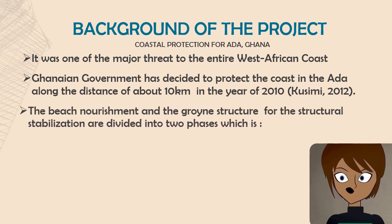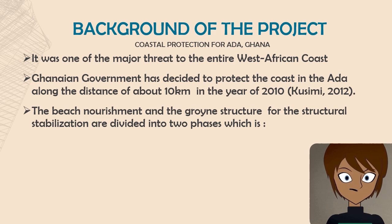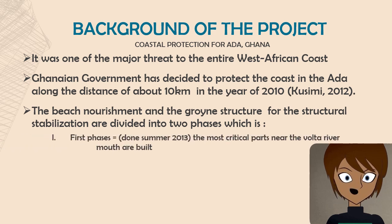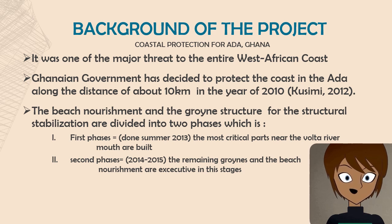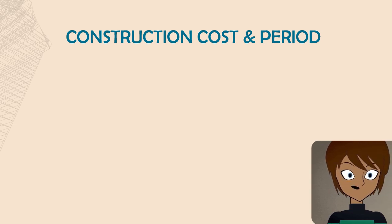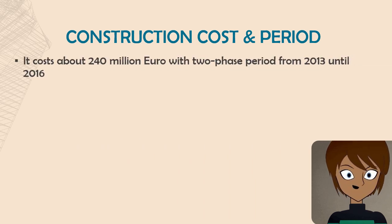The beach nourishment and ground structures for structural stabilization were divided into two phases. The first phase focused on the most critical part near the river mouth and was completed in summer 2013. The second phase focused on the remaining grounds, and beach nourishment was executed in this stage, completed in 2014 to 2015. The total construction cost was about 240 million euros, covering both phases from 2013 to 2016.